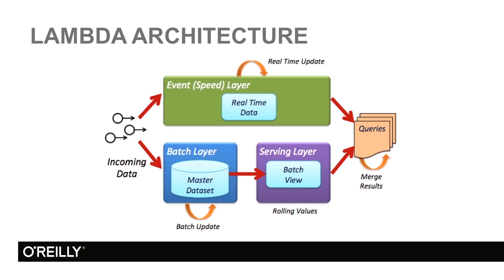One of the problems in implementing Lambda Architecture is that we have a functionality that exists in the event layer, and a similar functionality exists in the batch layer. If you are using systems like Storm and Hadoop, you will need to use two different programming environments to implement your jobs.